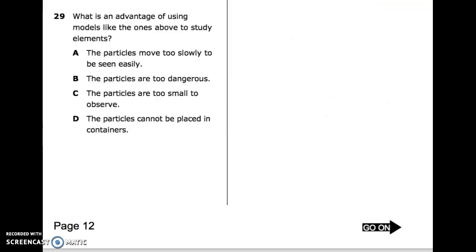29: What is an advantage of using models like the ones above to study elements? A. The particles move too slowly to be seen easily. B. The particles are too dangerous. C. The particles are too small to observe. D. The particles cannot be placed in containers.